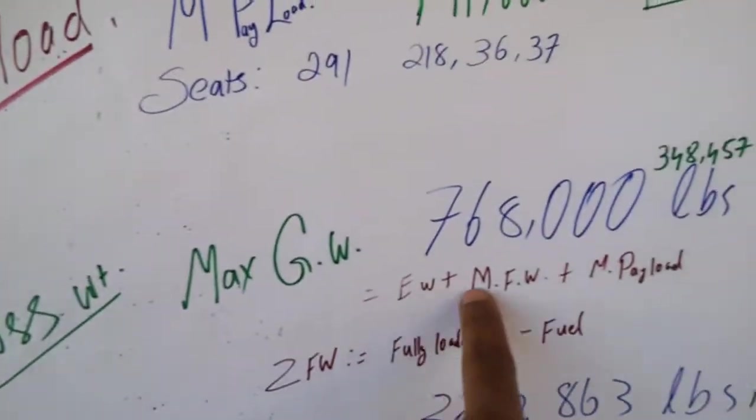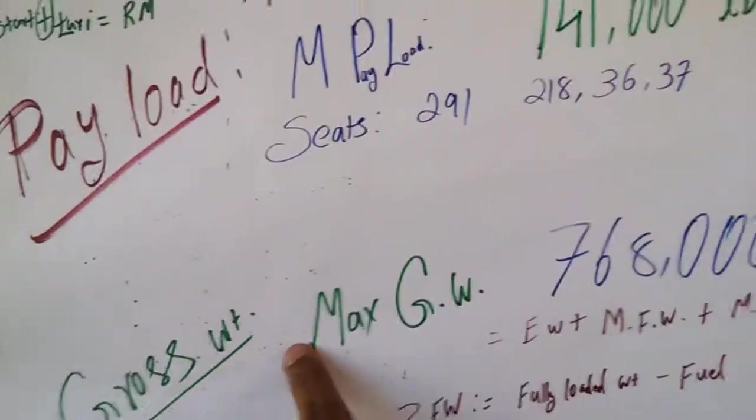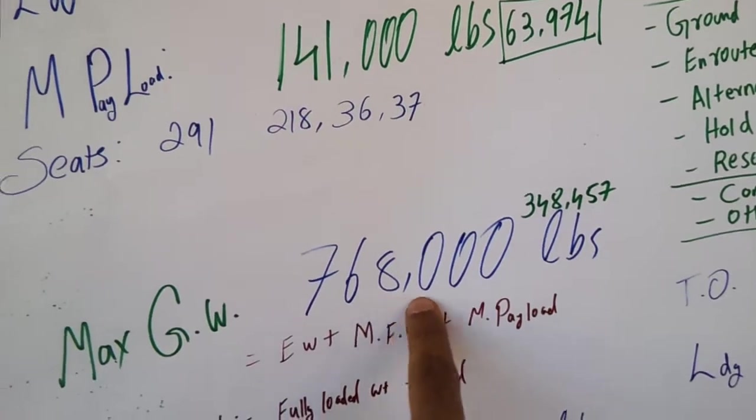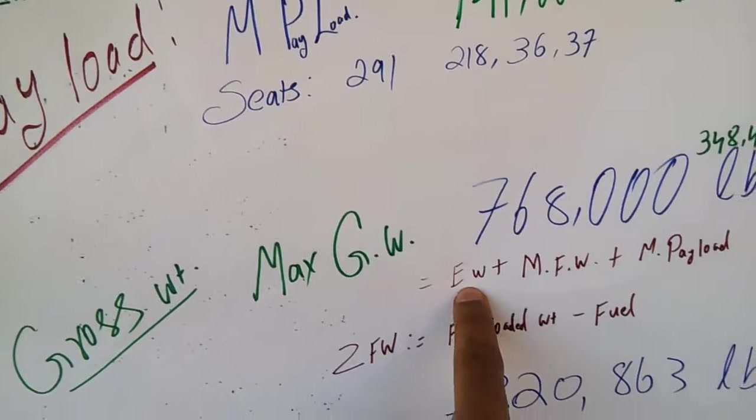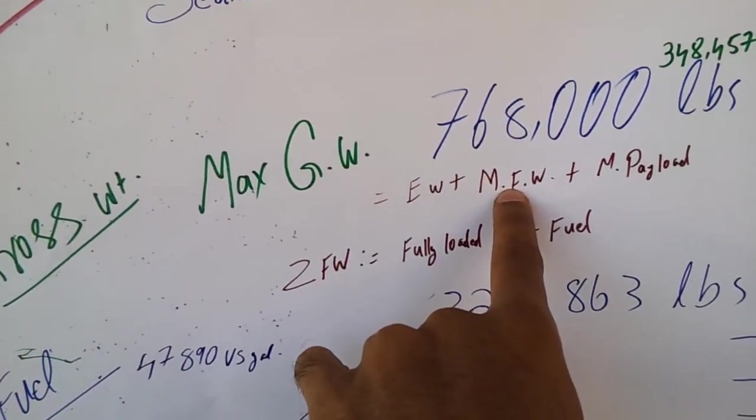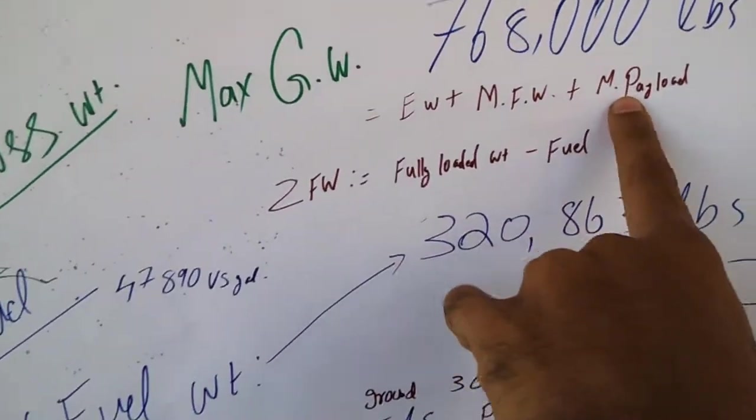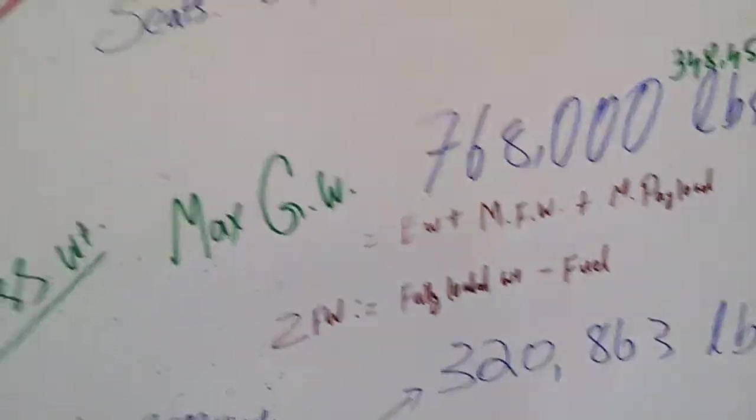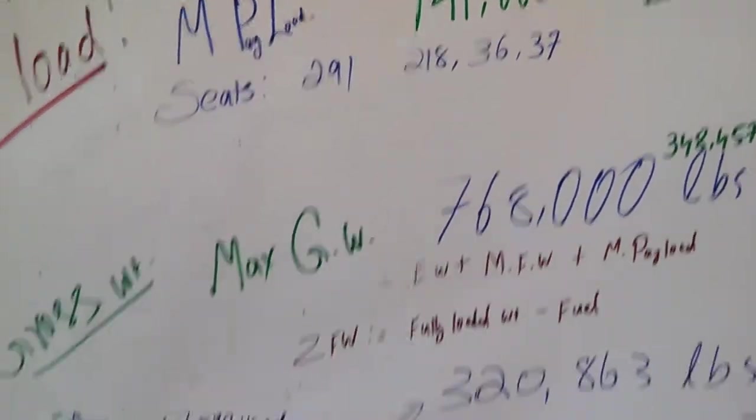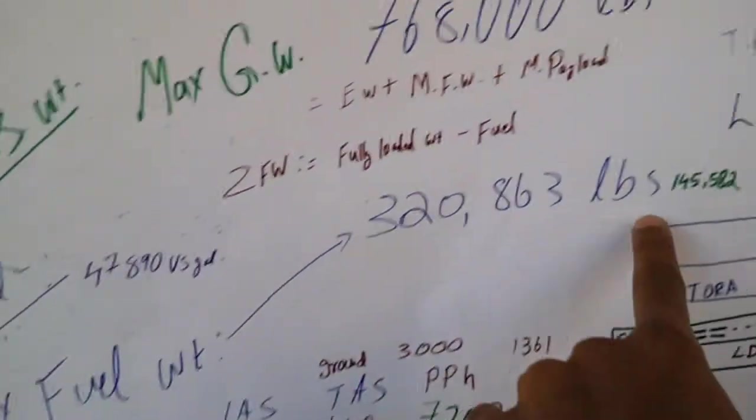The gross weight - the max gross weight it should not exceed 768,000. This gross weight means empty weight plus maximum zero fuel weight plus maximum payload. Zero fuel weight is fully loaded minus the fuel. The fuel I've already explained here - the maximum fuel.